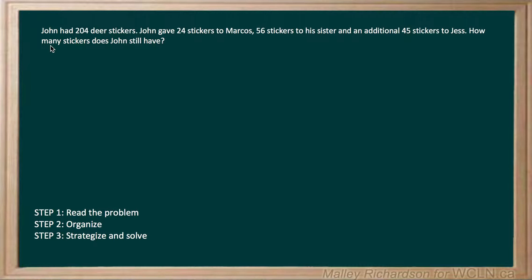Now let's move on to step two where we organize what we have. We know that John gave away 24 stickers, 56 stickers, and 45 stickers to different people, and he originally had 204 stickers. So now we just have to find out how many stickers does John still have.